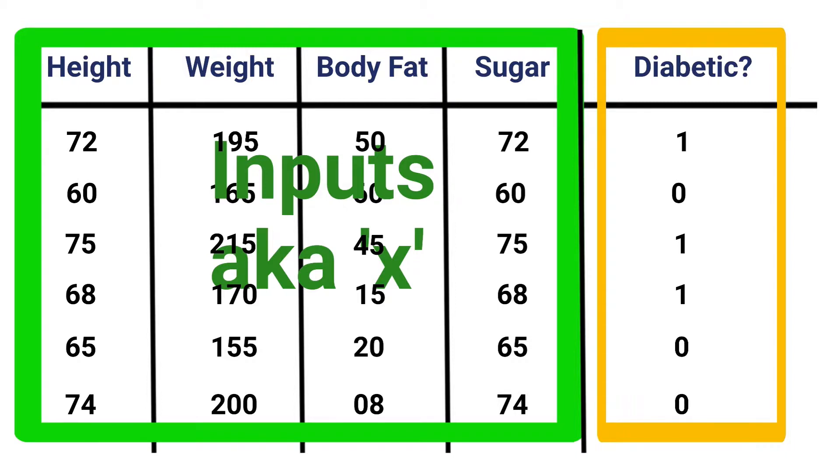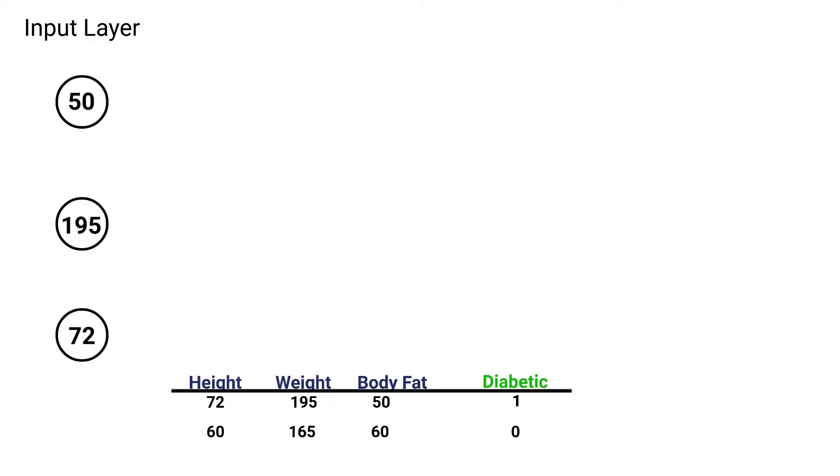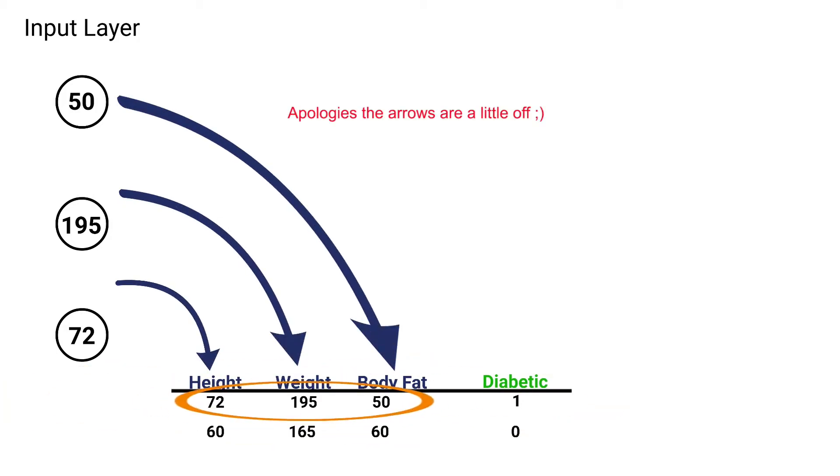Now let's walk through how a data set like this might be used to train a neural network. So let's add our data to the screen here. Now I removed sugar from our data set, but that was done purposely just to make our screen a little cleaner and less confusing. Now the first thing we're going to do is let's draw our input layer. Now, we need one neuron per input data element. So as you can see, height, weight, and body fat. They each map to a neuron.